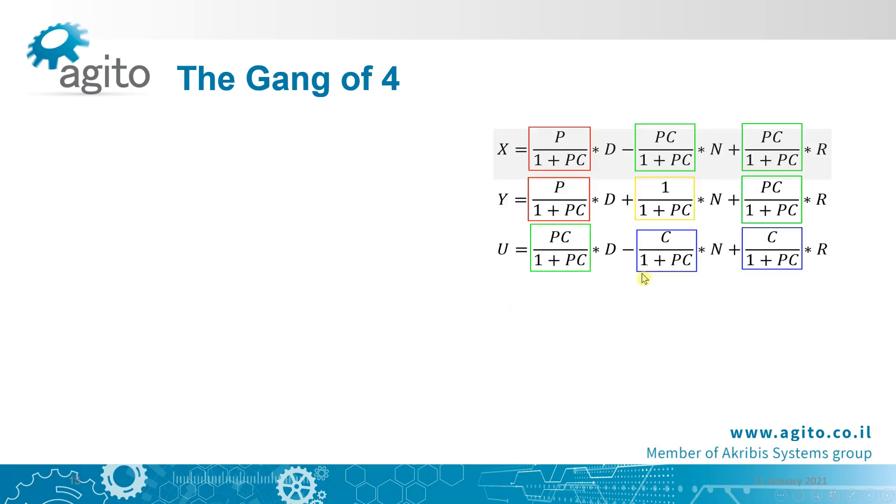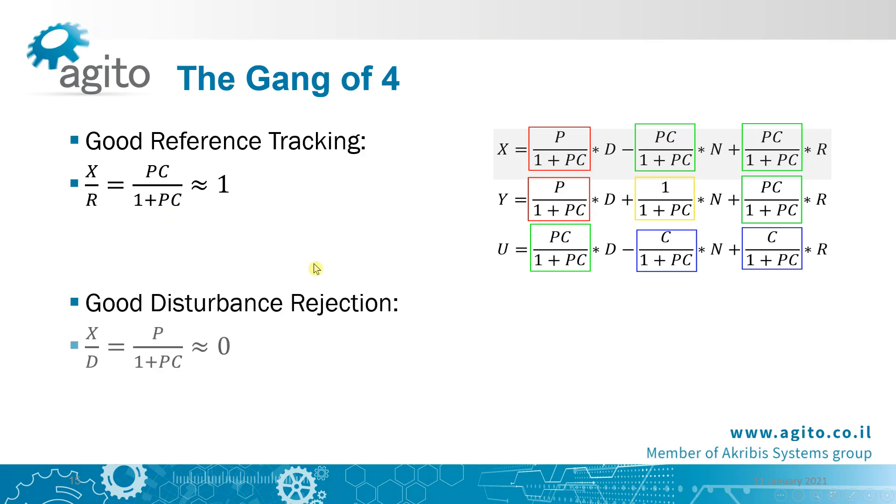The transfer function that dictates how well we'll follow the reference signal is this one. We want this transfer function to be close to 1. That means we want the 1 to be negligible. So we'll try to make PC, our open loop transfer function, as large as possible. And the transfer function that dictates how well we'll reject disturbances is this one. We want this transfer function to be very small, meaning PC needs to be much greater than P, or C needs to be very large.